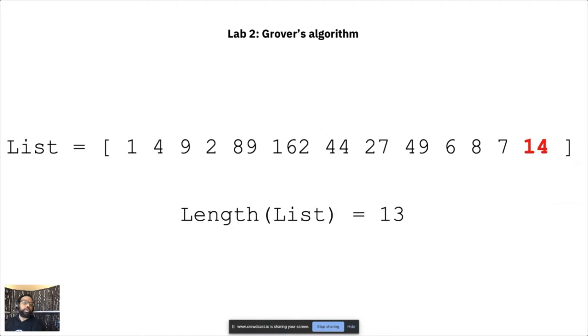And then eventually say I've found the number. On a quantum computer, the promise of Grover's algorithm is that you can find the marked elements in a list in square root of the number of items in the list.